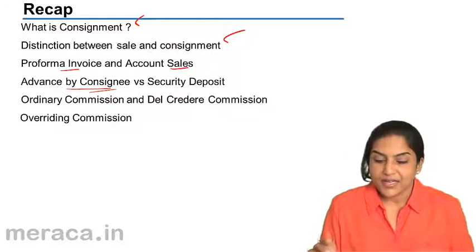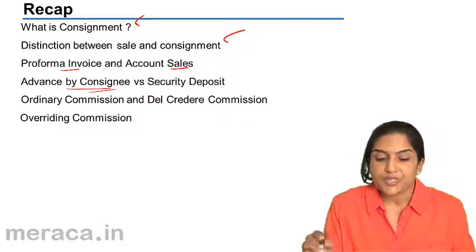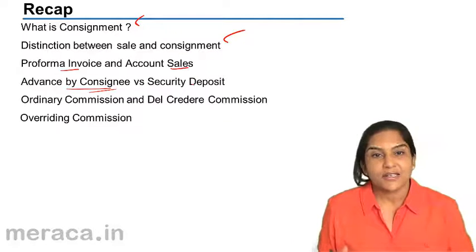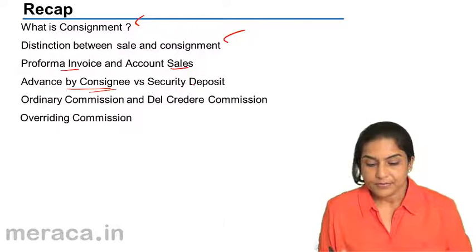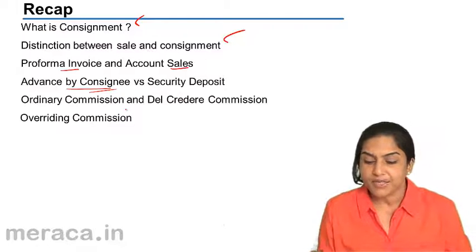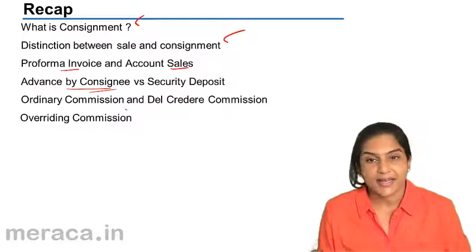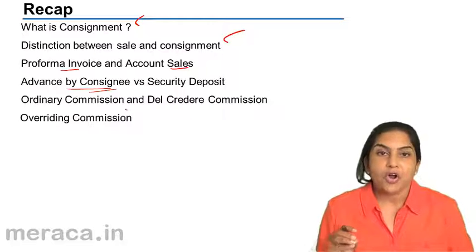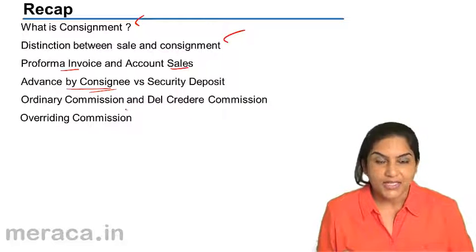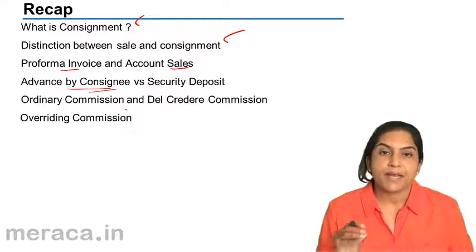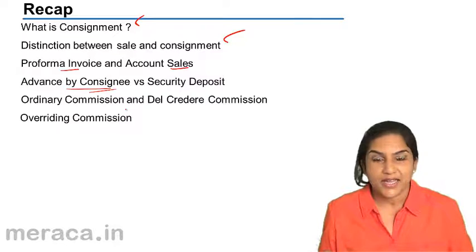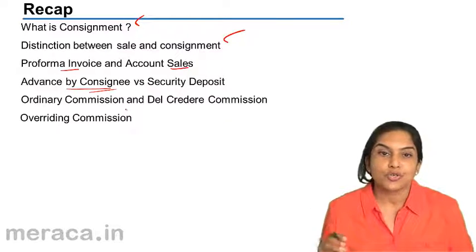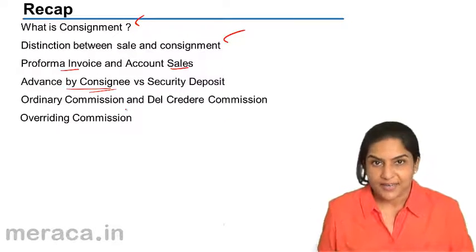We will understand security deposit and advance a little later in our discussion. We then discussed ordinary commission and del credere commission. Ordinary commission is the commission on total sales, paid by the consignor to the consignee because the consignee sells goods on behalf of the consignor.